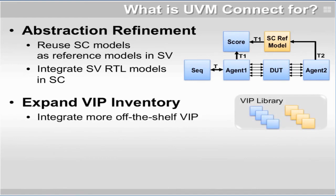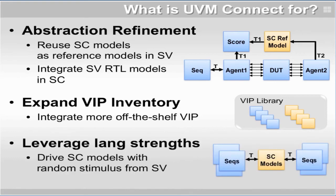UVM Connect can also expand your VIP inventory to include both SystemC and SystemVerilog IP. This allows you more off-the-shelf reuse for IP existing or sourced in two different languages. You can leverage the language for its strength — for example, you can drive SystemC models with random stimulus from SystemVerilog using UVM Connect.